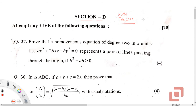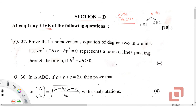Section D consisted of 8 questions overall, and as you can see here, you were expected to solve any 5 out of those 8 questions. Total marks for Section D is 20, and because you had to solve any 5, each question carried 4 marks — so 5 × 4 makes it 20.